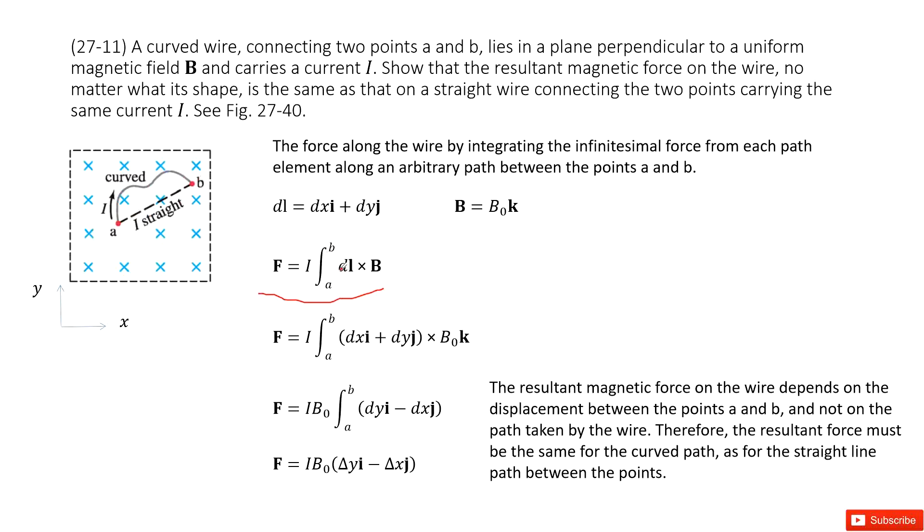Now you can see L is vector, B is vector. So we can write them in vector format. So dL, we can see, is a small fraction. It must be dx at i component plus dy at j component. And B is in the k component. So now we input them inside.